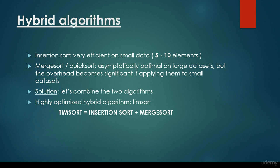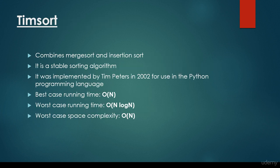And we end up with a highly optimized hybrid algorithm, the so-called timsort. So if we combine insertion sort with merge sort, we get timsort. It combines merge sort and insertion sort. It is a stable sorting algorithm. It was implemented by Tim Peters in 2002 for use in the Python programming language.